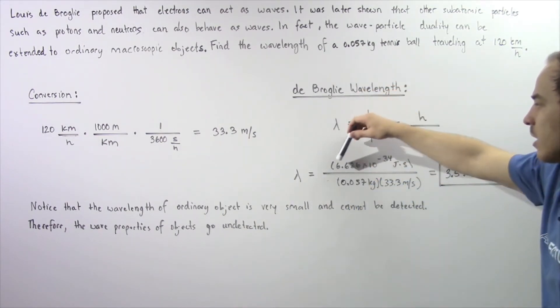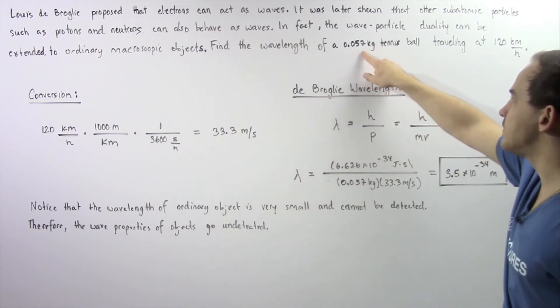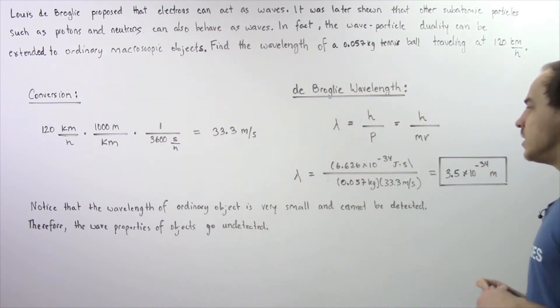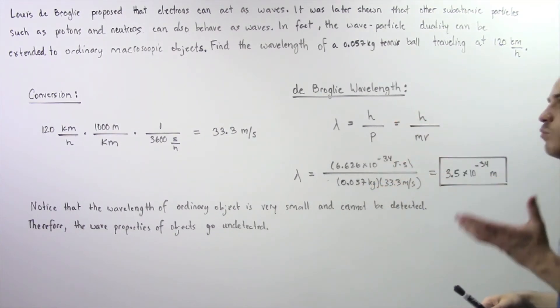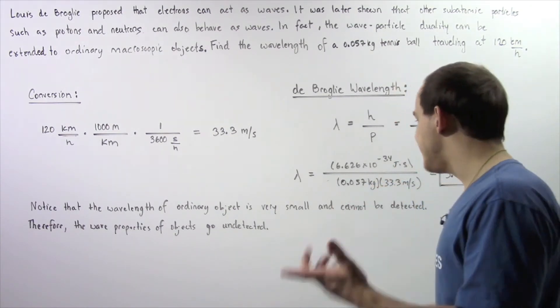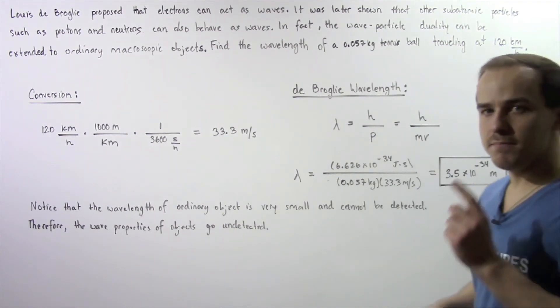So we plug in h, our Planck's constant. We plug in our mass of 0.057 kg and we plug in our velocity. So we multiply, divide and we get a wavelength that is equal to about 3.5 times 10 to the negative 34 meters.